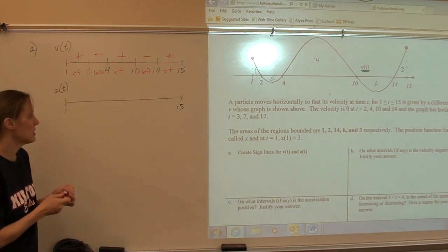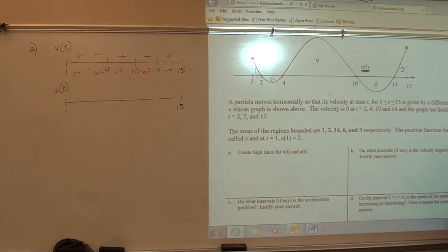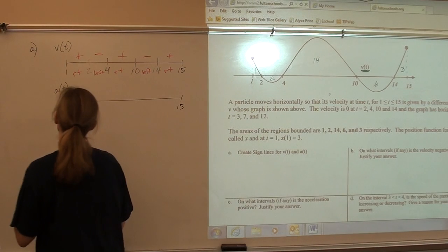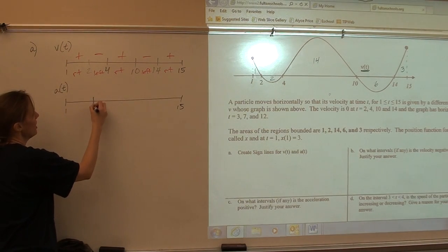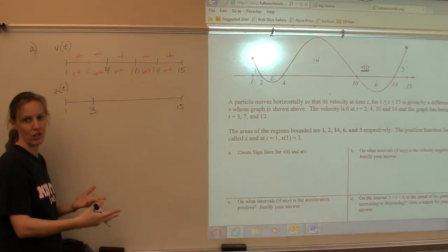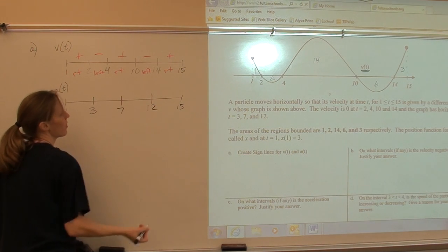Alright. Acceleration. 3, 7, 12. The critical numbers for the acceleration are the places where the velocity changes direction, right? They're the maxes and mins of velocity. So 3, 7, 12.